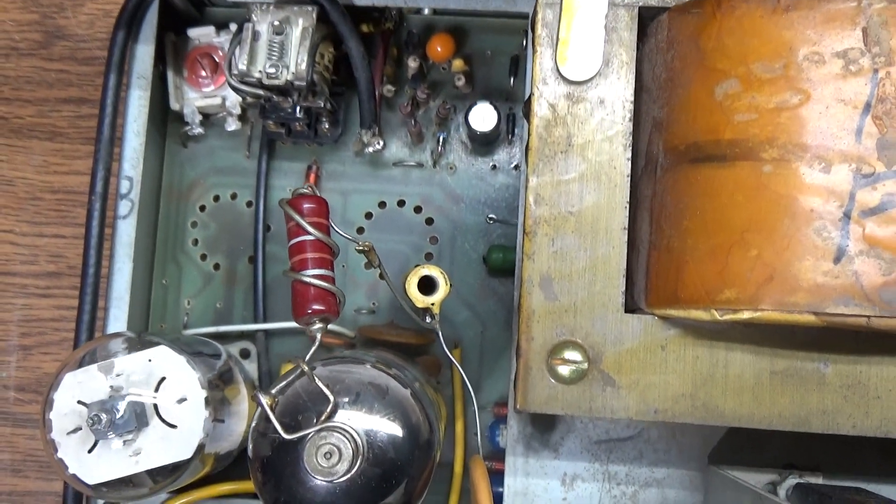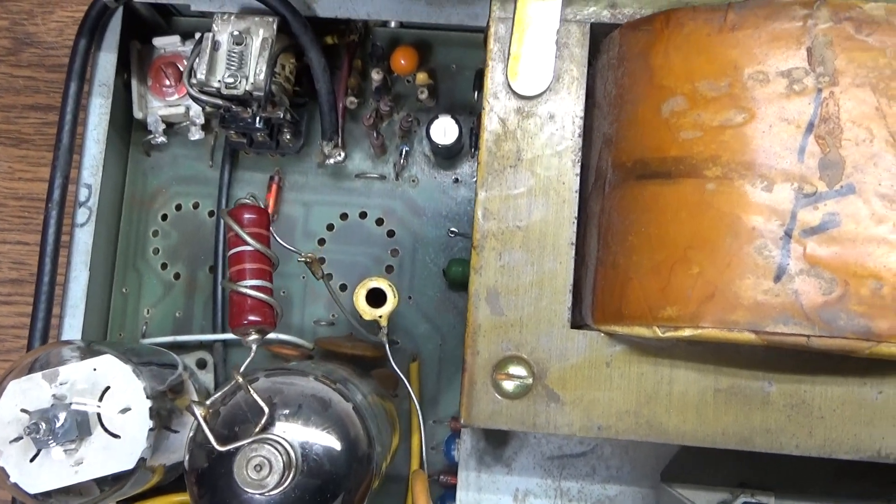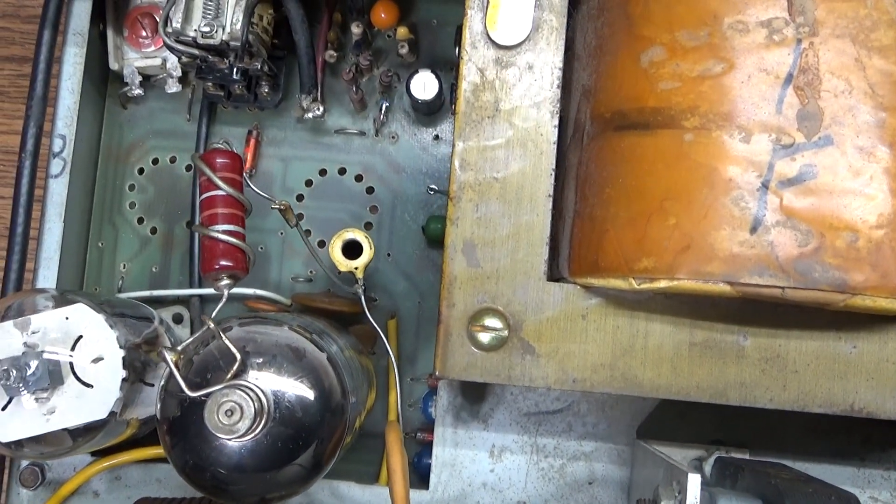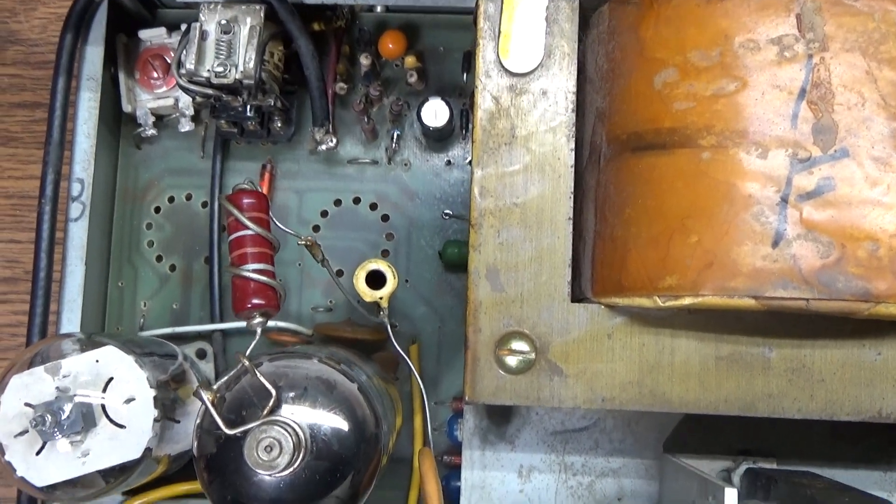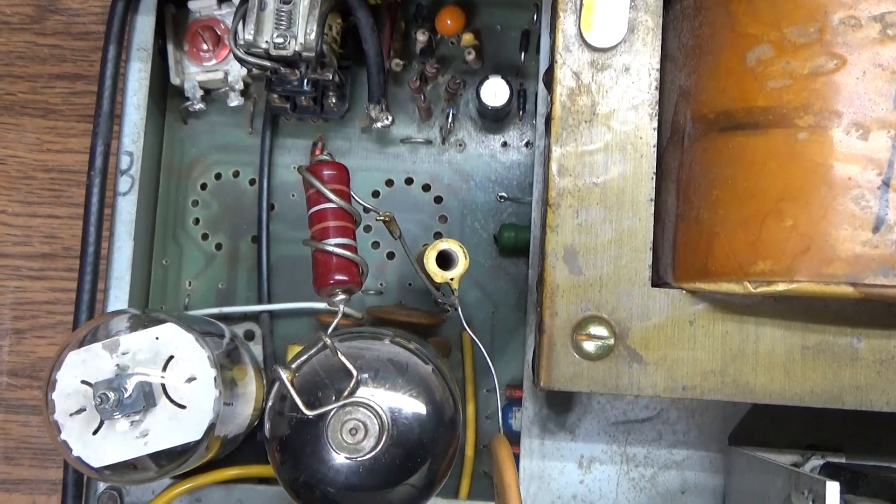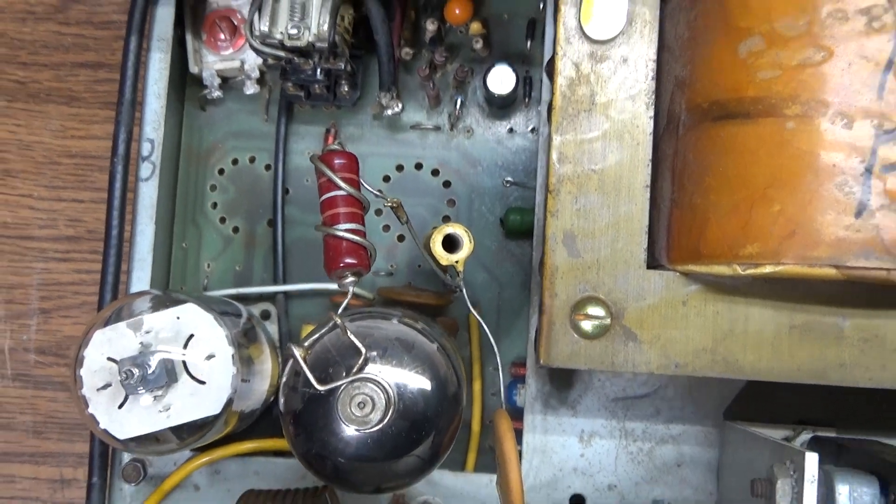CB Tricks has the schematics for the 150 through 450. Same board, same schematic, except there are more tubes as you go along.